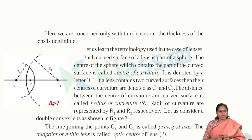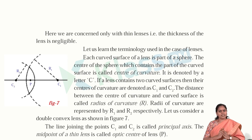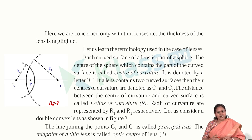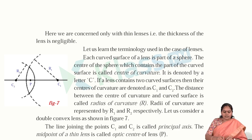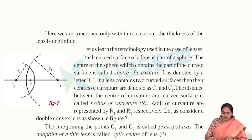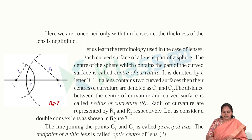Each curved surface of a lens is part of a sphere. A lens is a combination of two transparent surfaces, so we have two curved surfaces. The center of the sphere which contains the part of the curved surface is called the center of curvature. In a biconvex lens, there is one center for each sphere, so we have two centers represented as C1 and C2, respective to each curved surface. The center of curvature is denoted by the letter C.